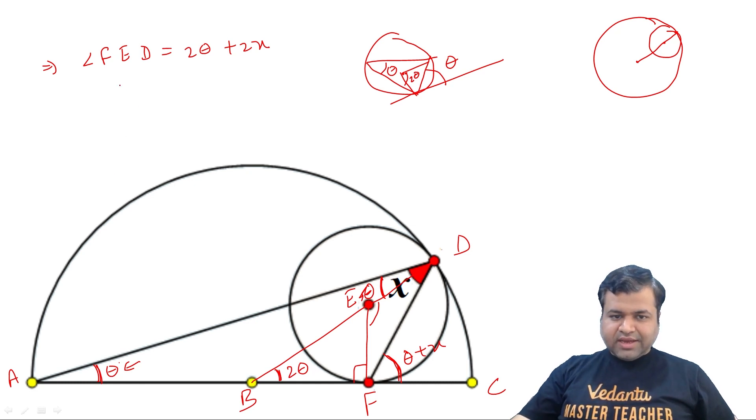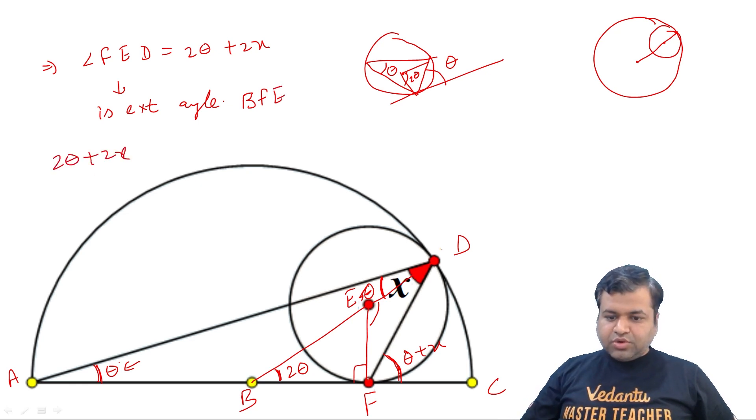Now again, can I say FED is exterior angle, which triangle? This is BEF triangle exterior angle. That should be equal to, that means 2 theta plus 2x, should be equal to interior opposite. So that should be equal to 2 theta plus 90 degrees.